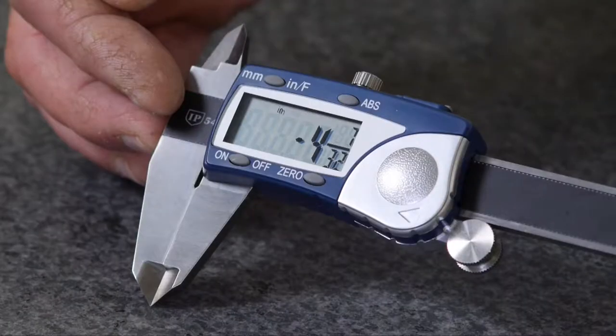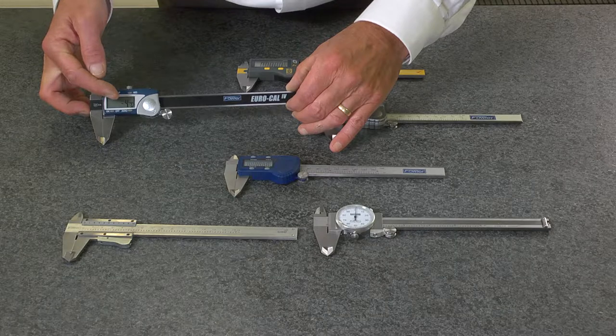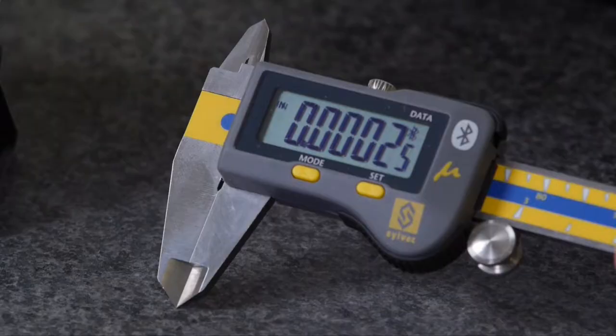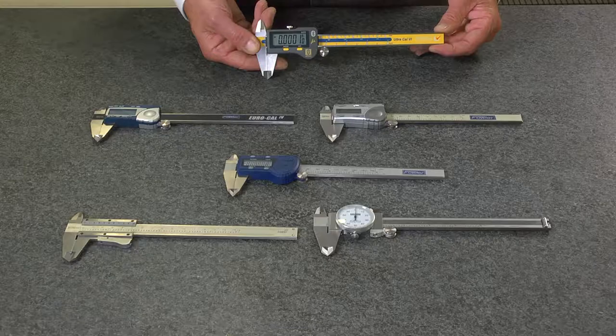We also carry IP54 rated calipers which feature inch, metric, and fractional readings. Fowler also offers the Sylvac UltraCal6 electronic caliper.